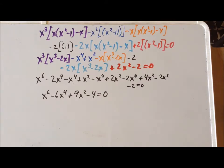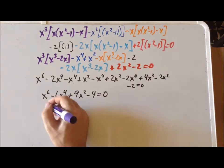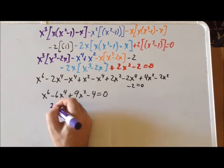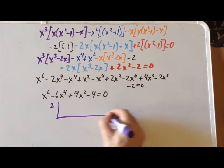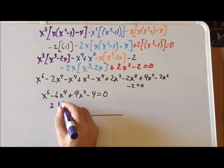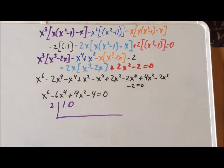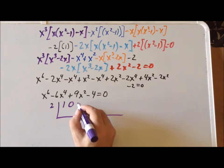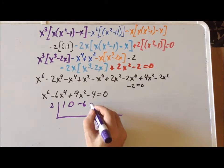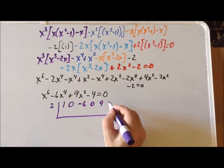So we can first try a possible root of 2 and we can use the technique of synthetic division. So our coefficients are 1. Remember that we need to put a 0 for the powers of x that don't appear, such as x to the fifth, x to the third, and x. Minus 6, 0, 9, 0, minus 4.